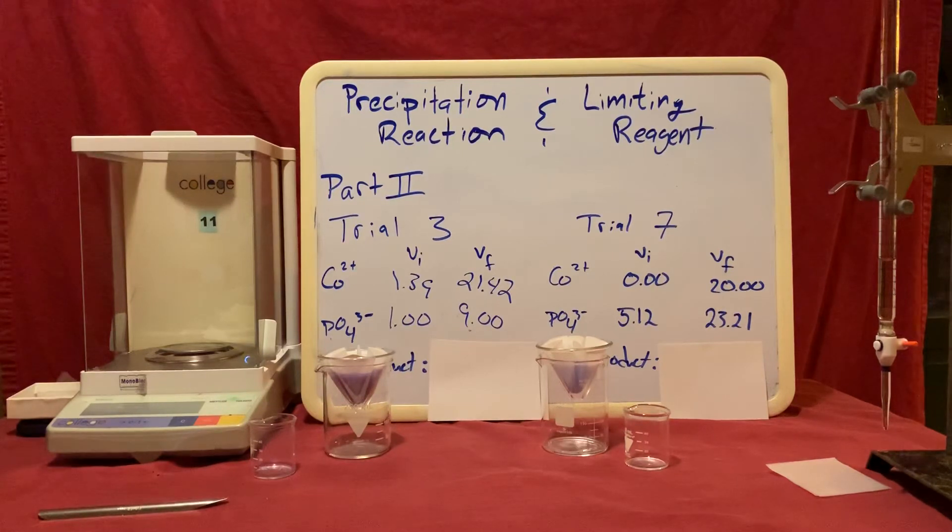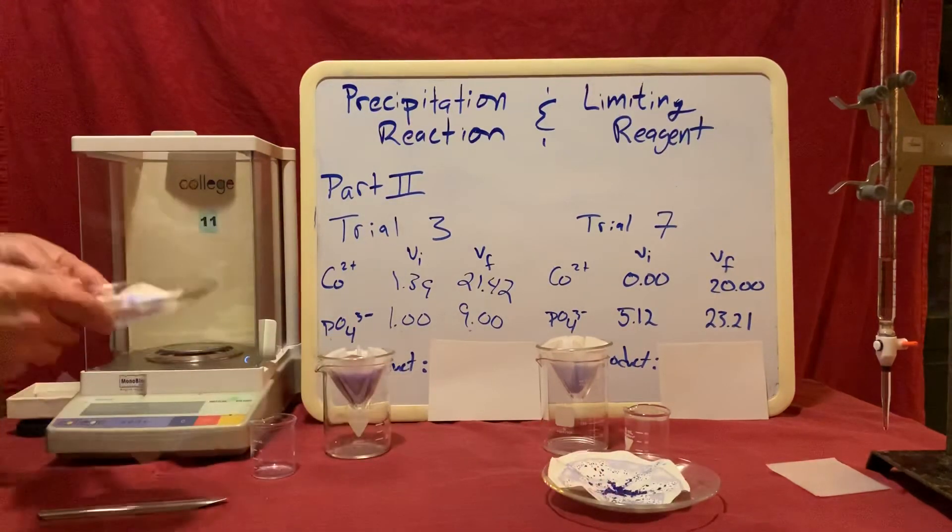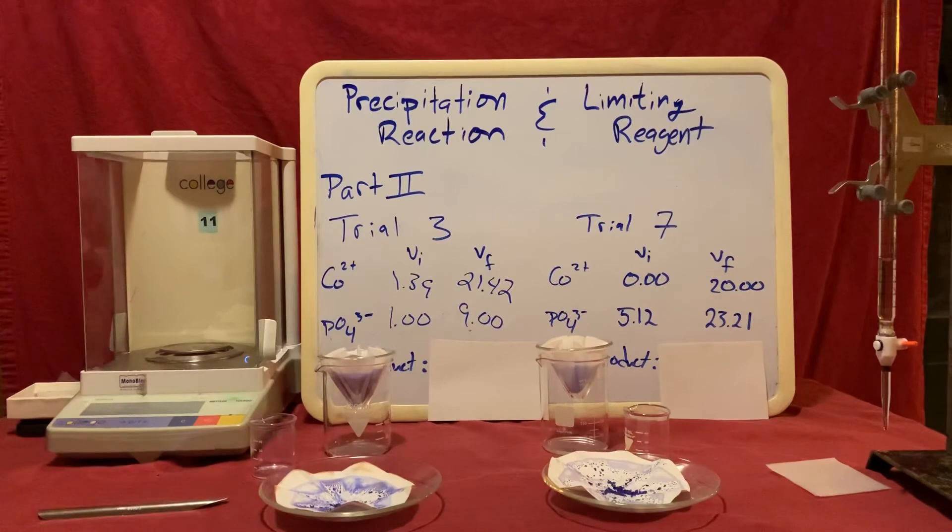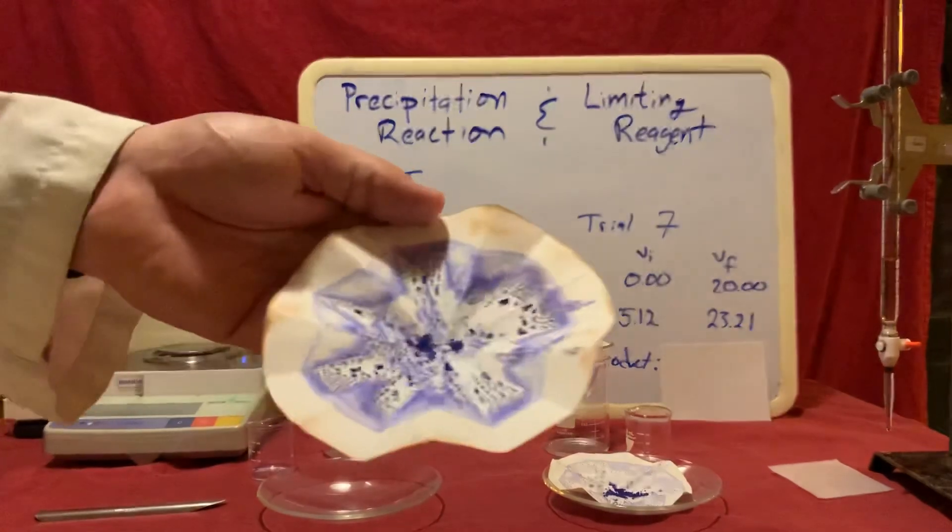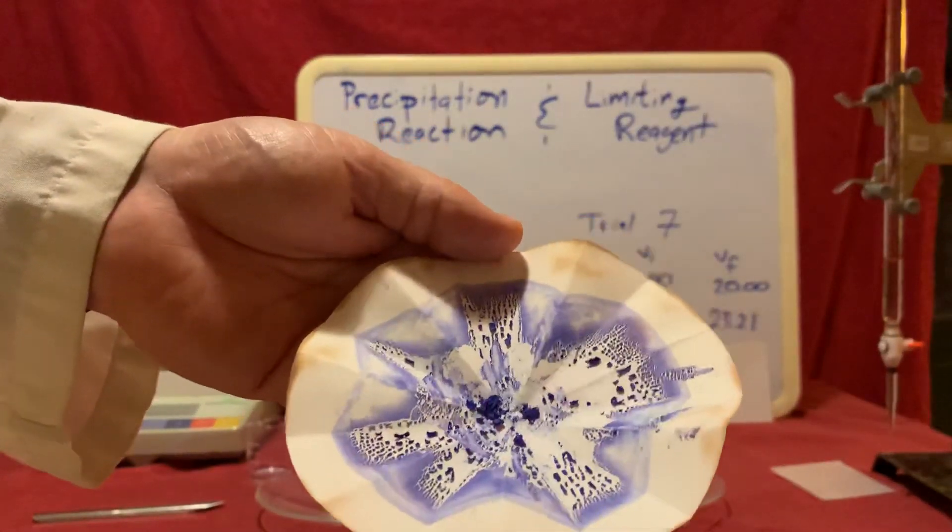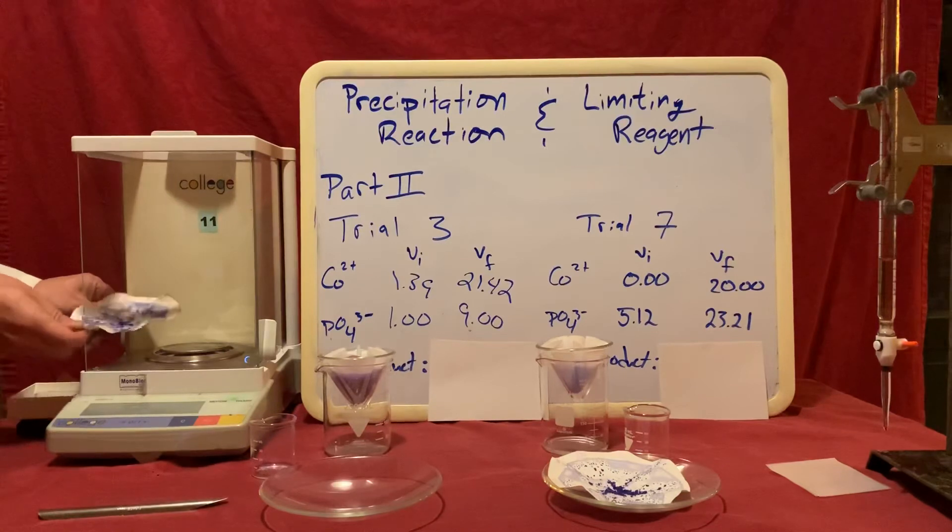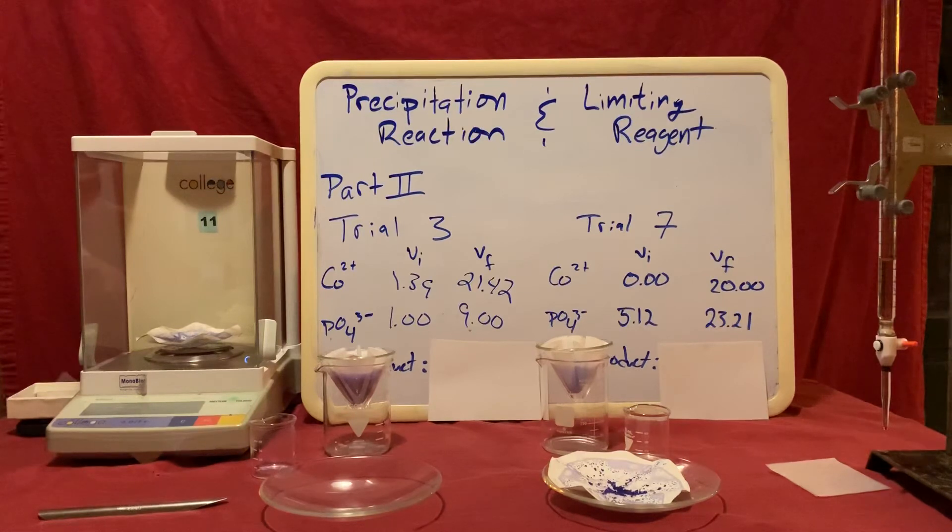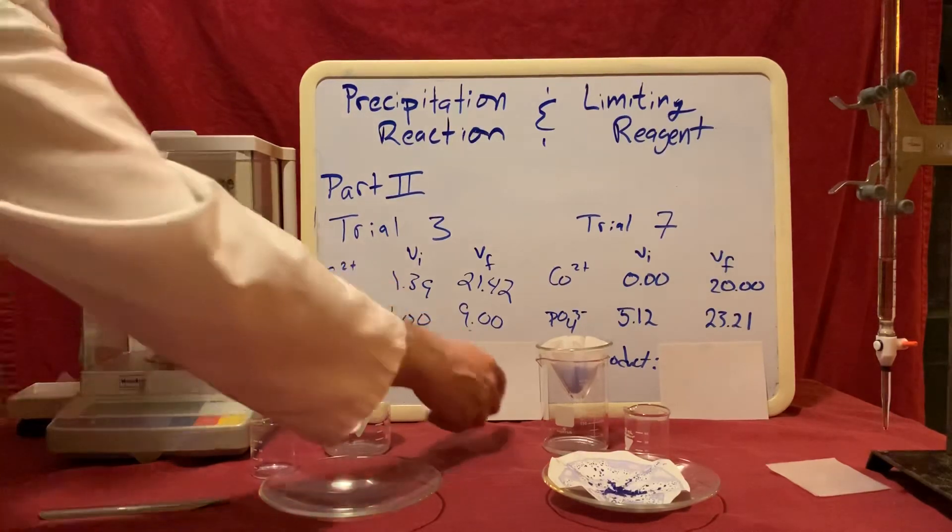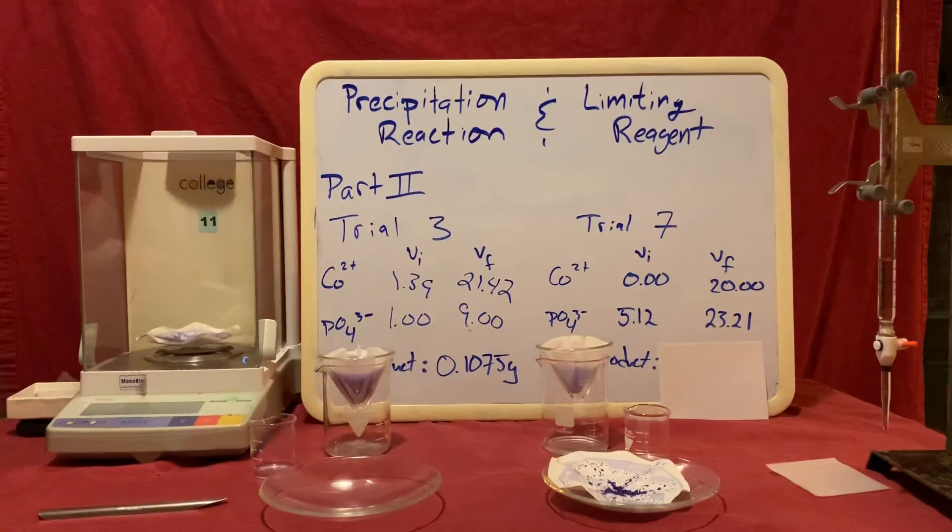Now, because that too takes some time, I have prepared both a trial 7 and a trial 3 example. You can see here my trial 3 example, I now have a nice dry solid. I would take this, place it upon the balance, note my total mass, subtract the mass of the empty filter paper, and determine the mass of my product. In the case of trial 3, I managed to get a yield of product of 0.1075 grams.